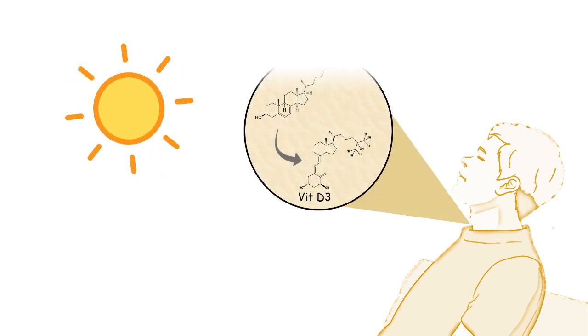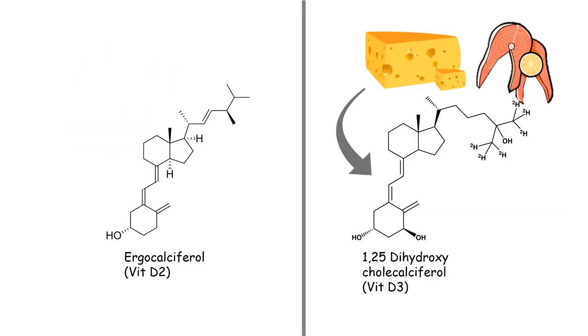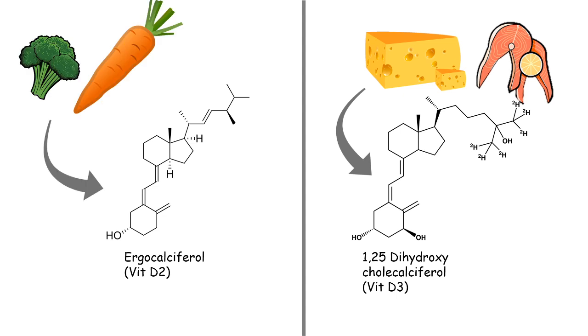It turns out vitamin D3 synthesis takes place in the skin. At least the beginning part takes place in the skin. There are many formats of vitamin D which can be obtained in food items. For example, in case of vegetables, vitamin D2 or ergocalciferol is obtained, and vitamin D3 is obtained from many animal sources such as fish and dairy products.